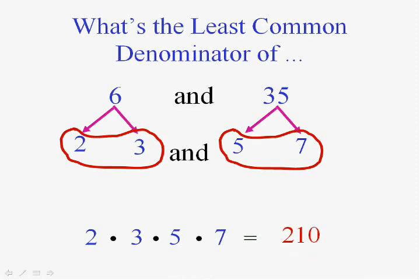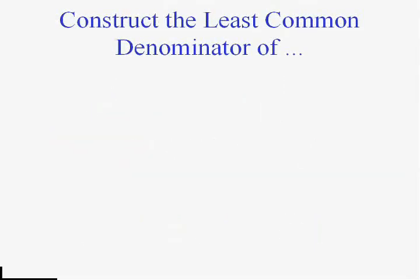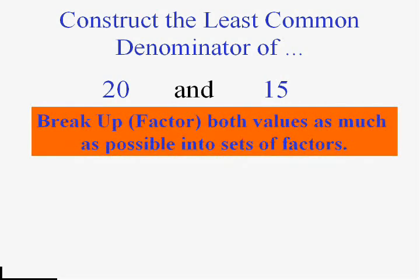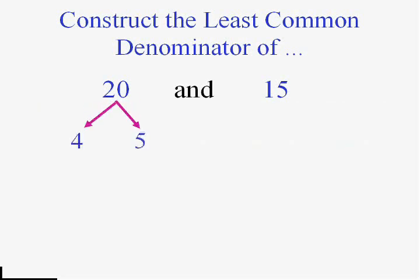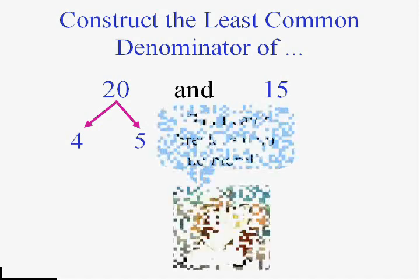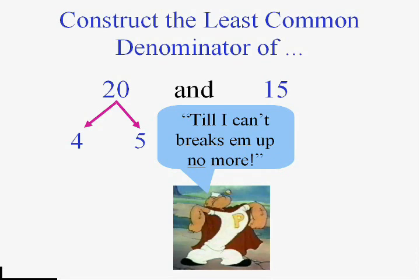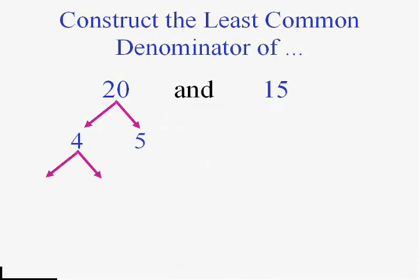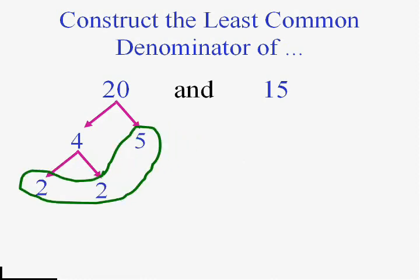That one didn't end up being very small. Let's try and find a smaller least common denominator of 20 and 15. The smaller they are, the easier they'll be to work with. Let's break 20 up into 4 and 5. Now, 4 can go further, so I break it up into 2 and 2. Now I've broken up 20 as far as it can go. 15 breaks up into 3 and 5, and neither of those can be broken up, so they're prime as well.